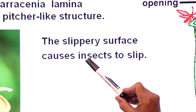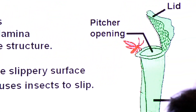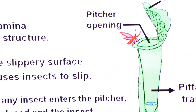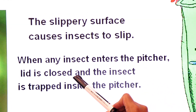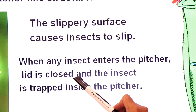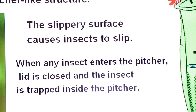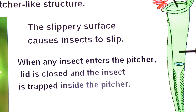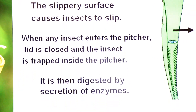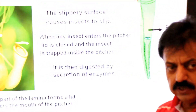When any insect enters the pitcher, the lid is closed, and the insect is trapped inside. The insect is then digested by the secretion of enzymes. So that was the first plant covered — the pitcher plant — and now we move to the next insectivorous plant.